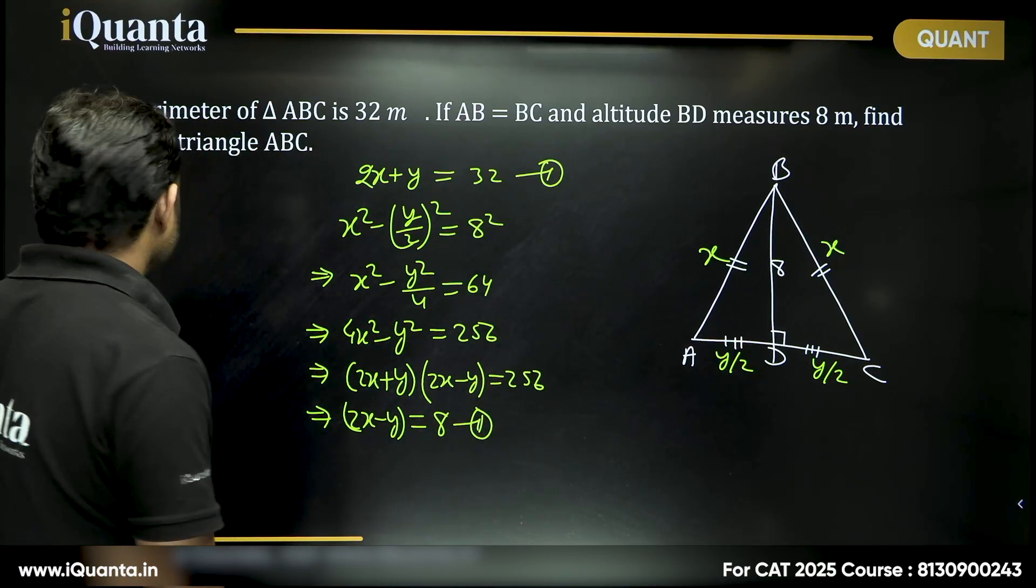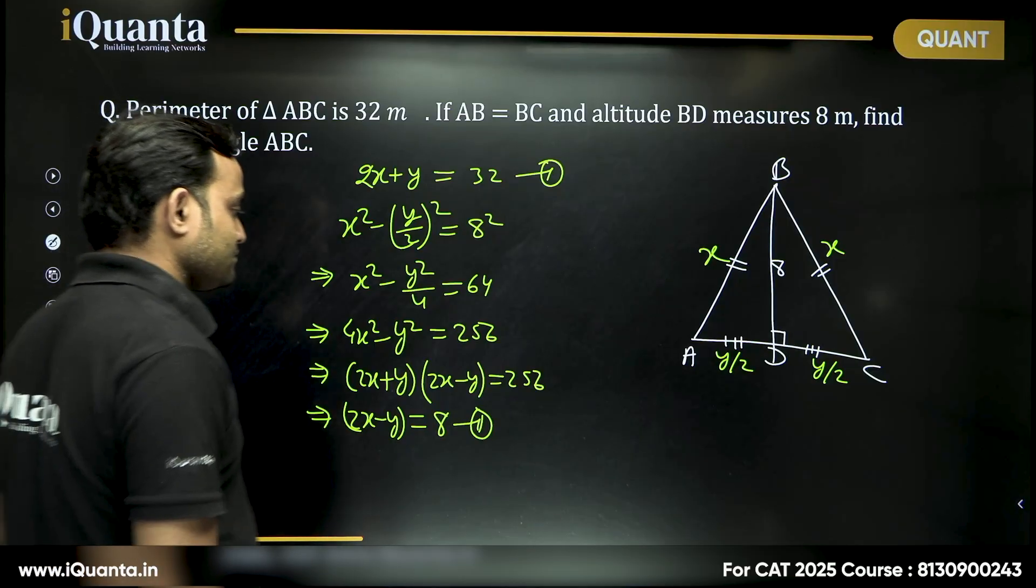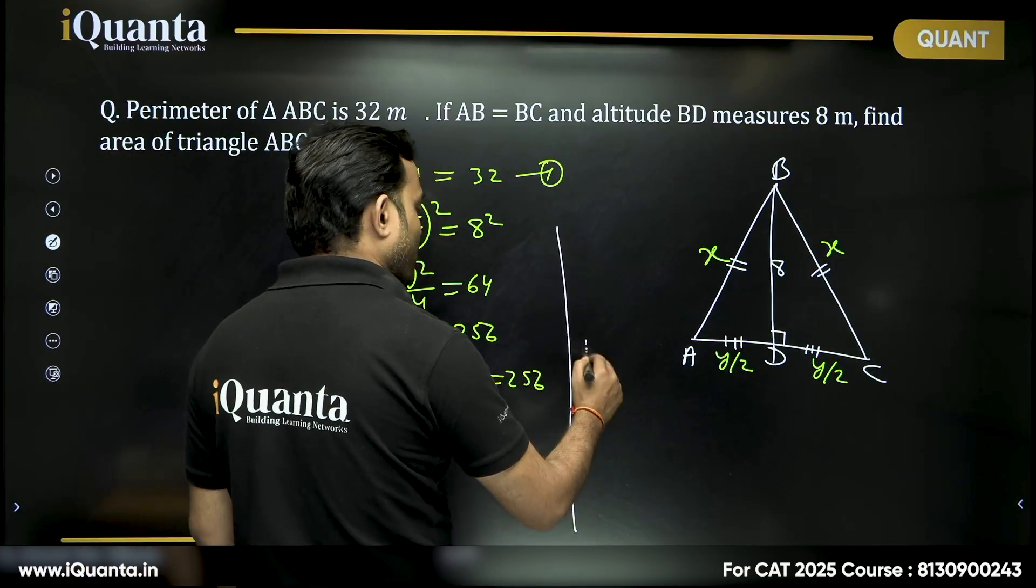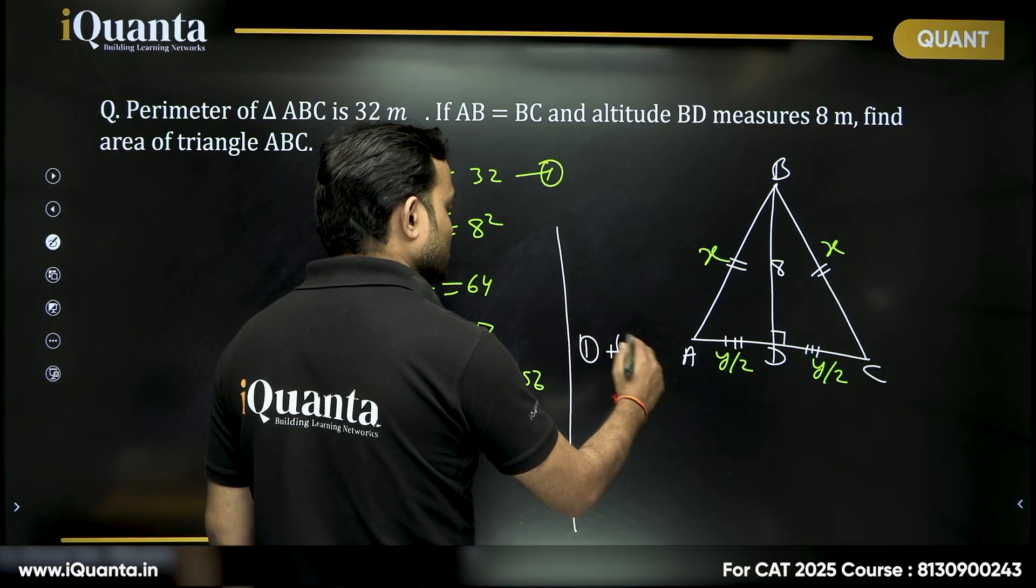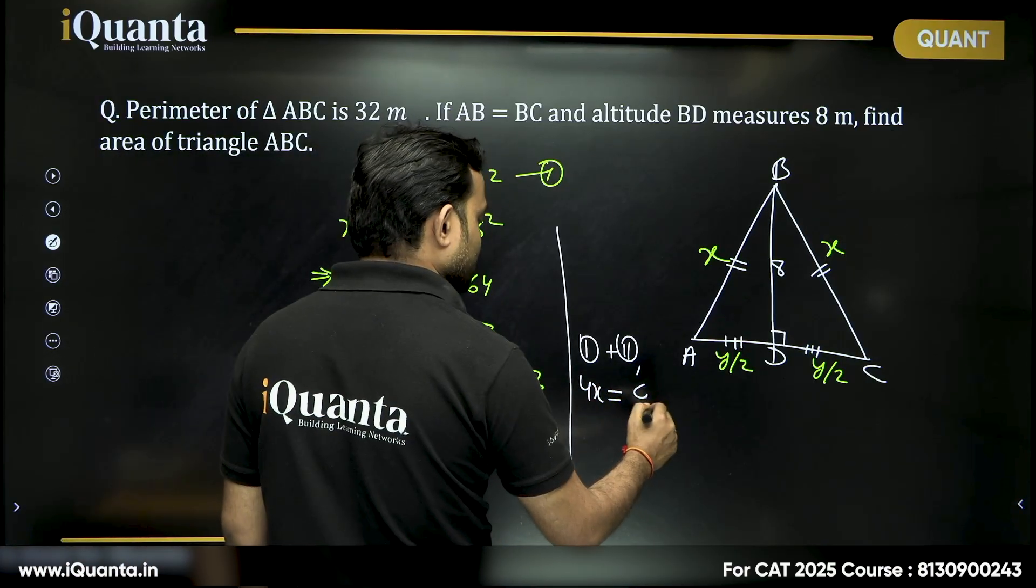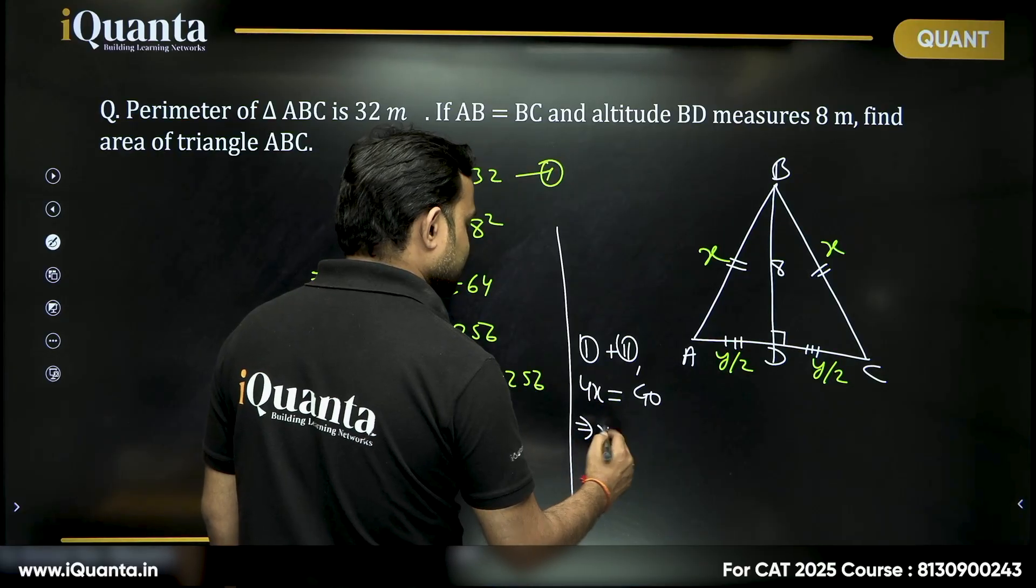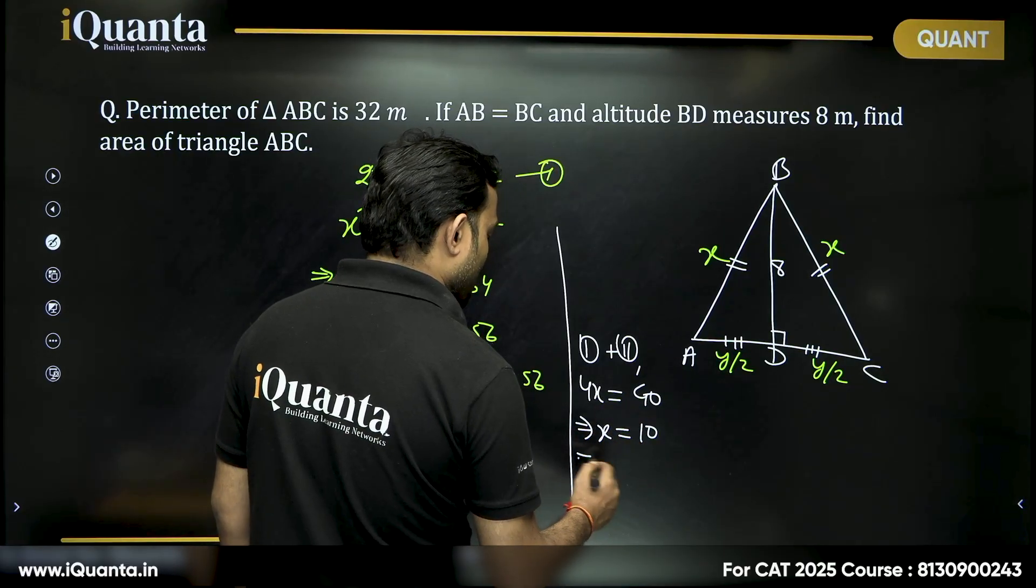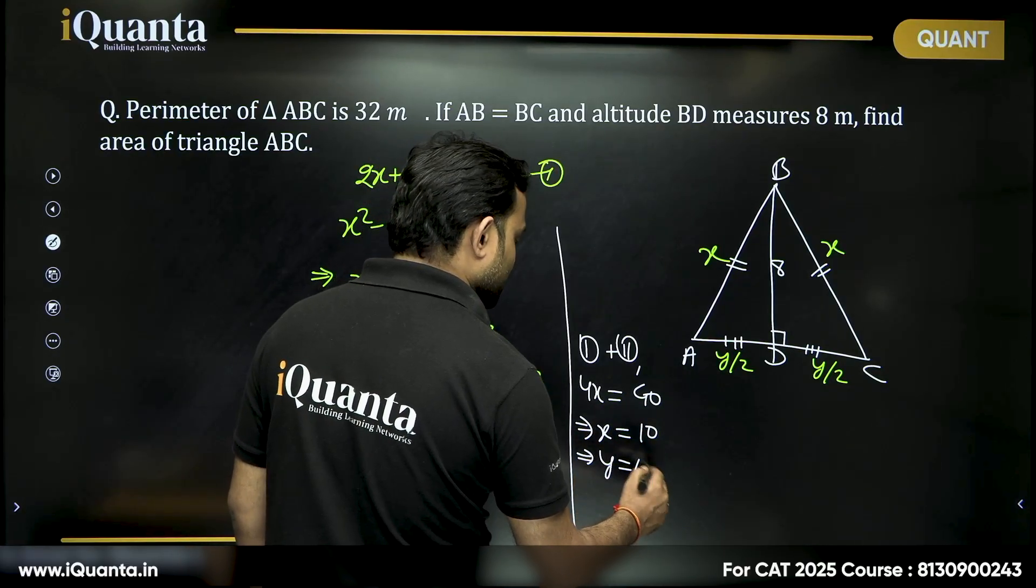Now, we got two equations and two unknowns. So, from equation 1 plus equation 2, we get 4X is equal to 32 plus 8 which is 40. From there, we get X is equal to 10 or we get Y is equal to 12.